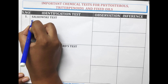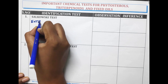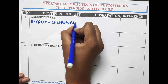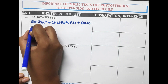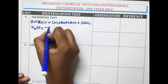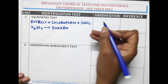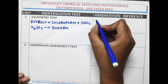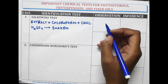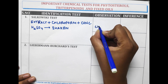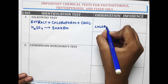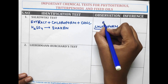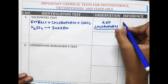In the Salkowski test, the extract is mixed with chloroform and concentrated H2SO4 and is shaken well. The lower layer, which is the chloroform layer, when it changes to red colour, it indicates the presence of steroids.